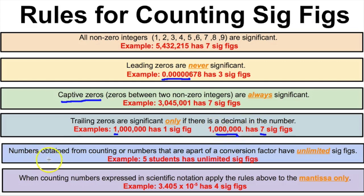Rule five: numbers obtained from counting or numbers that are part of a conversion factor have unlimited sig figs. If I count five students in a class, that number has an unlimited number of significant figures. Similarly, three feet in one yard — both the three and the one have unlimited sig figs because they are part of a conversion factor.